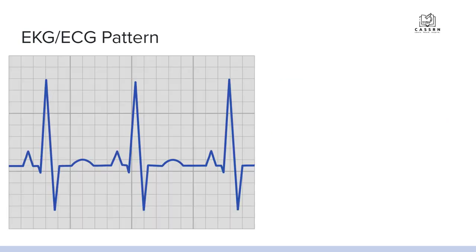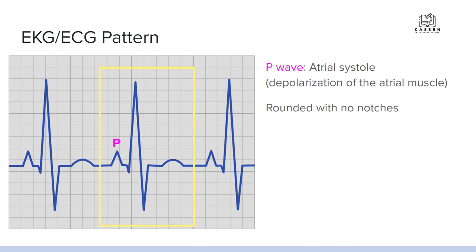Next up, we've got a regular EKG pattern — this is what you're going to see. This is one heartbeat. You've got the P wave, which is atrial systole or the depolarization of the atrial muscle — this is when that electrical impulse first starts. In this image it's peaked, but it's actually supposed to be rounded with no notches. So again, this is where the SA node initially sends down that impulse.